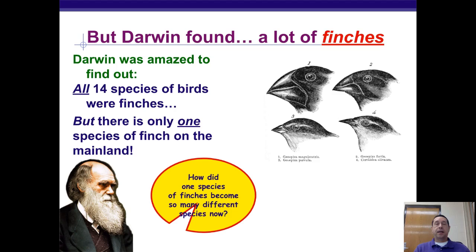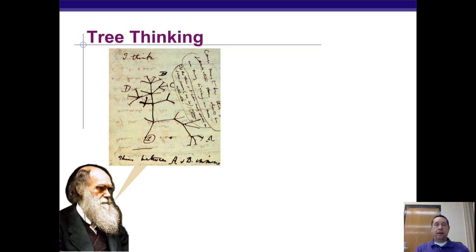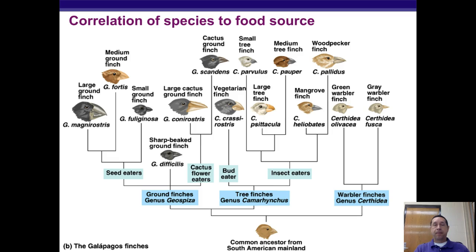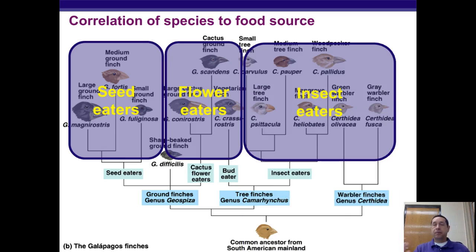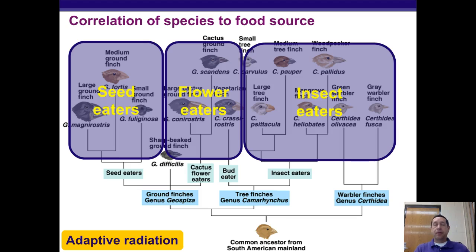Darwin began asking: how did one species become so many different species on these islands? He had the idea that there were ancestral species, with descendant species branching up the tree of life. The variety was related to the food sources available on different parts of the islands — some finches were seed eaters, some were flower eaters, some were insect eaters, and one even used a tool. Today we call this adaptive radiation — one species spreading into many different species in a relatively short evolutionary period of time.